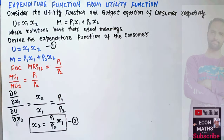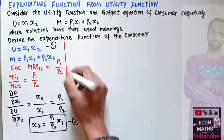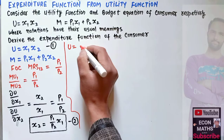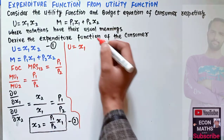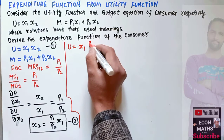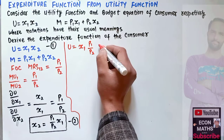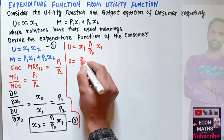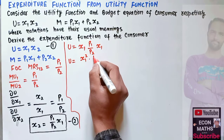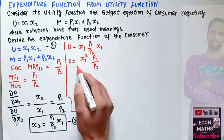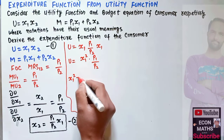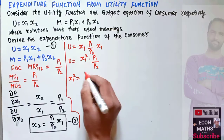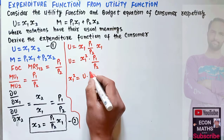Now substituting the value of x2 into the utility function (equation 1): u = x1 times (p1/p2)·x1, which gives u = x1² times (p1/p2). Solving for x1²: transposing gives x1² = u times (p2/p1).